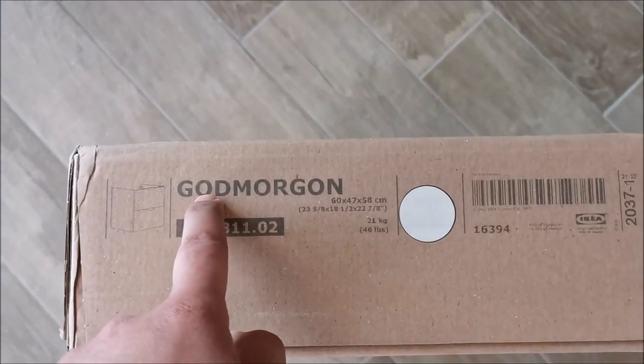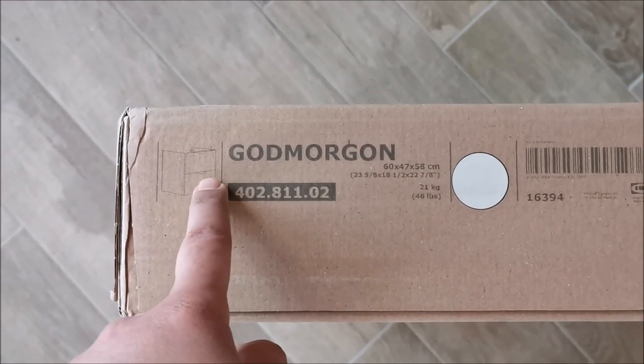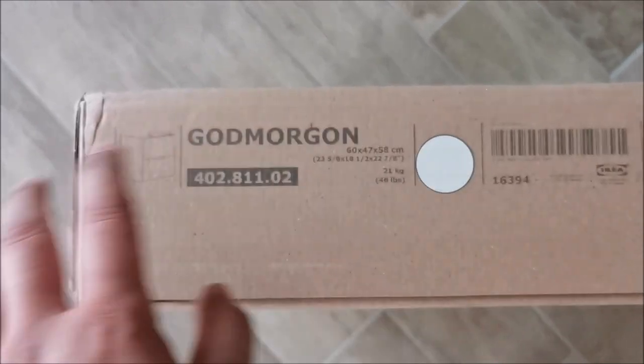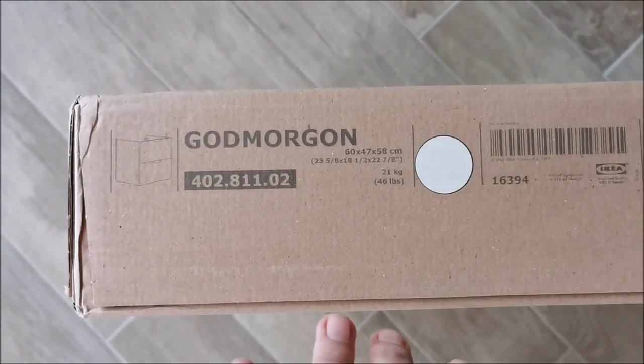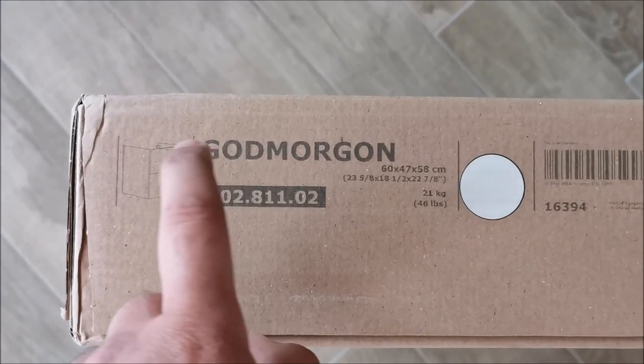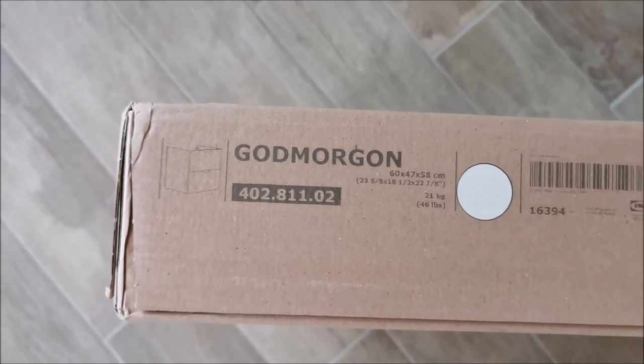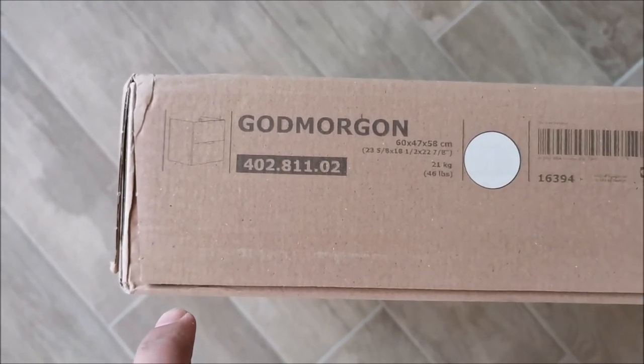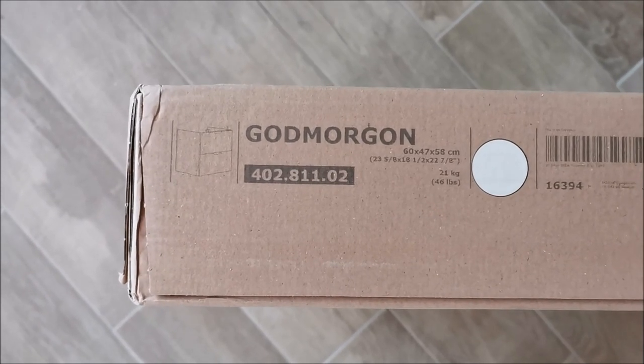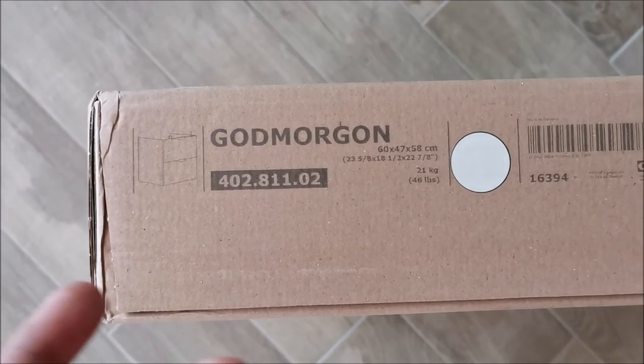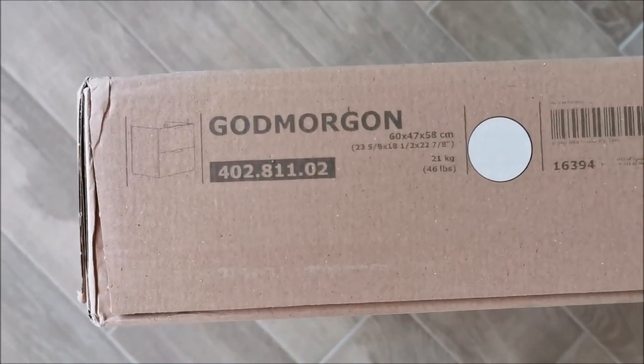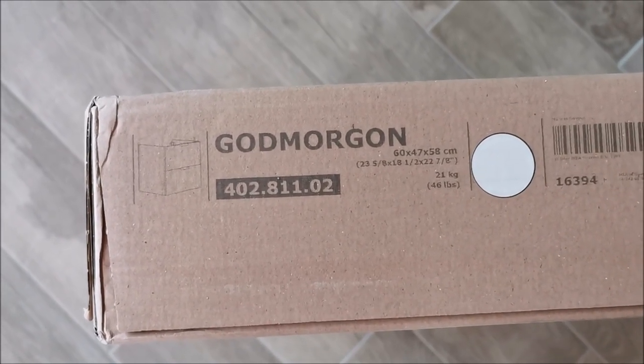Hi there! In this video we are going to be assembling and installing this Godmorgon. I am sure that I will not get at least one of these names correct, but anyway, this is the code for it. It's a bedroom vanity and on top of it will be an Odense Wick sink and an Anson faucet. But I will show them as I install them. Now let's unbox this and start assembling it.